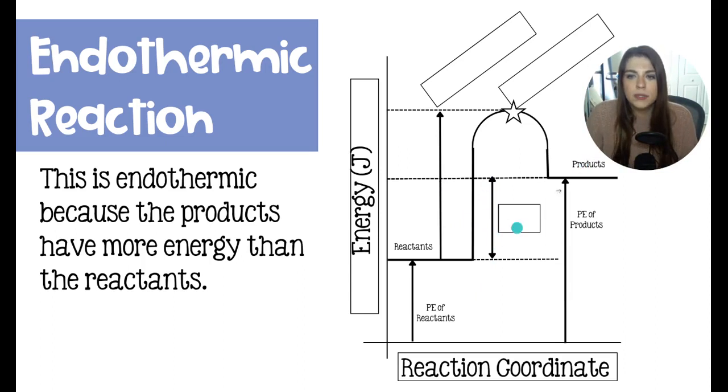So instead of taking the difference between this ledge and this ledge, we would take the difference between the products over here and the reactants down here. These would be the new products. So it would be this ledge minus that ledge, if you can kind of get what I'm saying here. So again, if you flip the reaction, nothing really changes height-wise because the potential energy is based on the bonds.